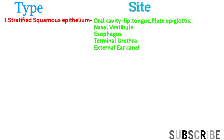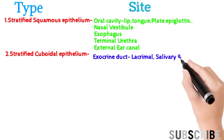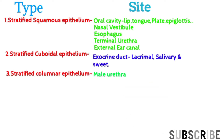Stratified cuboidal epithelium is present in exocrine ducts of lacrimal, salivary, and sweat glands. Its function is absorption and secretion. Stratified columnar epithelium is present in the male urethra and helps in absorption, secretion, and protection.